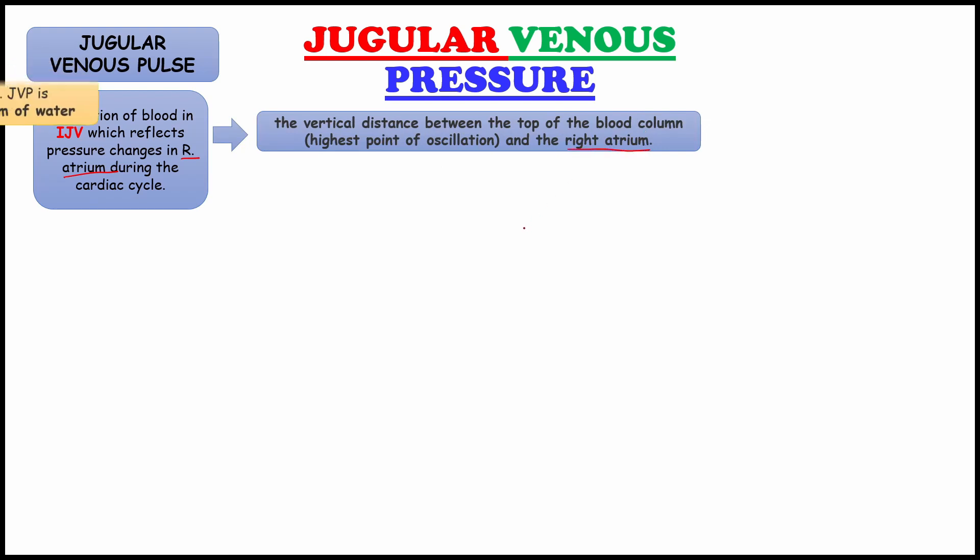Basically normal jugular venous pressure is 6 to 8 cm of water. Where we will check? We will check on the neck region especially in the place of right internal jugular vein.